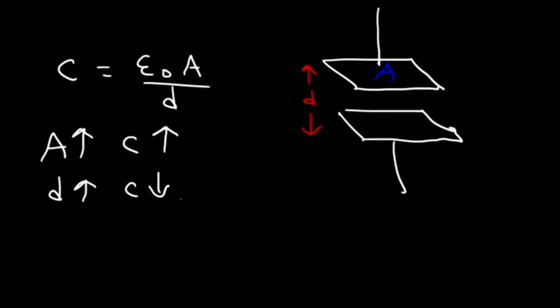Now if you increase the distance, the capacitance will decrease. Given the same amount of charge, if you increase the distance, the strength of the electric field between the two plates will decrease, and therefore the electric force on charges between the plates will be weaker. The capacitance will go down as well. So if you increase the area, the capacitance will increase; if you increase the distance, the capacitance will decrease.